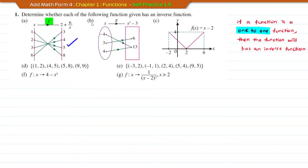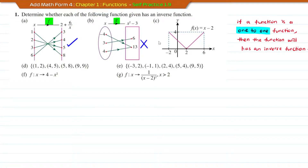Now look at question B. The function G maps x to x squared minus 3. Based on the diagram, the number 13 is mapped by two objects. Therefore, this function G is a many-to-one function, so this function G does not have an inverse function.